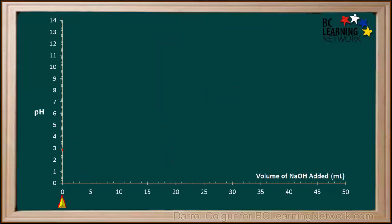As we add the first 4 mL of NaOH, the pH rises fairly quickly. Between 4 mL and 22 mL, the rate of increase in pH, or the slope, shows an obvious decrease.